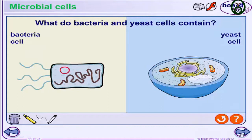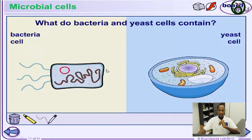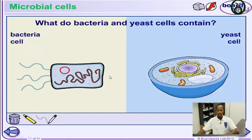The useful microbes, like yeast cells, are used for making yogurt, bread, alcohol, and other things we consume in our daily lives. So microbes fall into two categories: the harmful ones, particularly bacterial cells, and the useful ones.